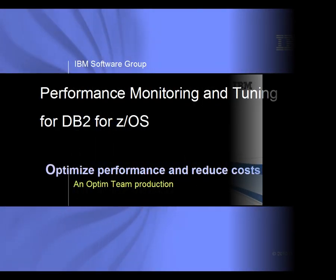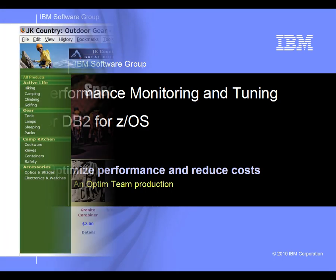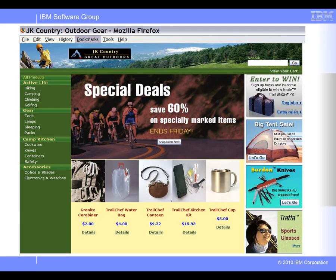Today we'll learn how a DBA at a fictional company uses IBM Query Monitor and Optum Query Workload Tuner to improve customer satisfaction and reduce costs by quickly identifying and tuning SQL performance problems. Let's visit the Great Outdoors Company, an online retailer selling sport and outdoor products. To uphold their commitment to customer satisfaction, they set the service level agreement for the online ordering response time to be no more than 30 seconds.